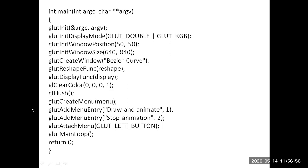glut_reshape_func is a registered callback function that calls the reshape function. glut_display_func calls the registered display function. gl_clear_color sets the background color of the window based on the alpha value set. gl_flush clears the buffer and forces output to appear on the window. We also create a menu with options like 'Draw and Animate' and 'Stop Animation'. glut_add_menu_entry adds menu entries, and glut_attach_menu indicates which mouse button click pops up the menu. glut_main_loop handles event processing.